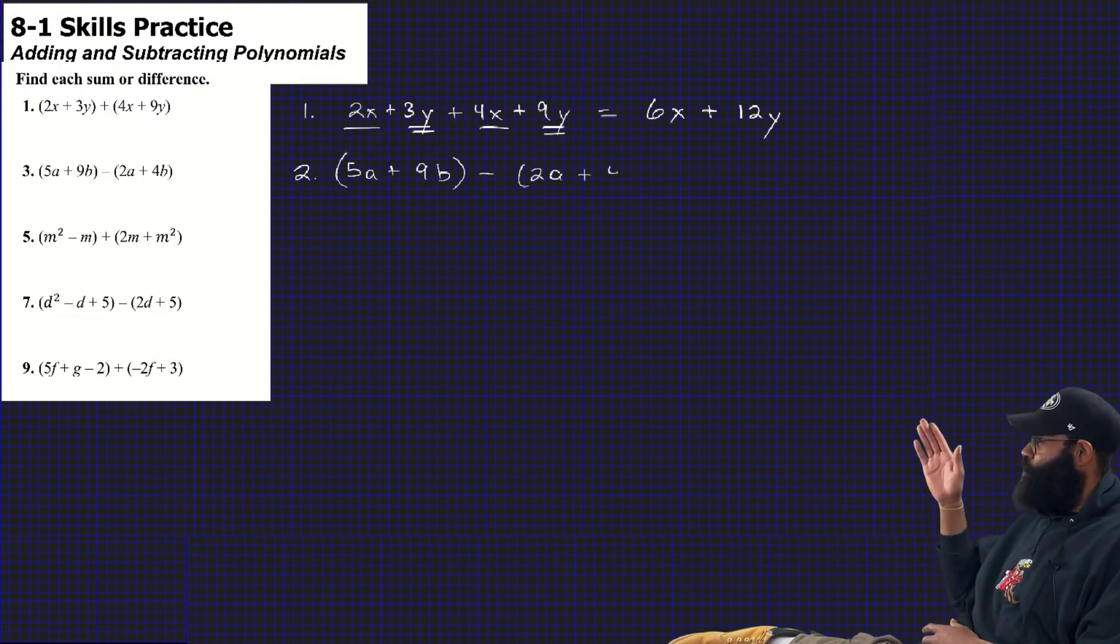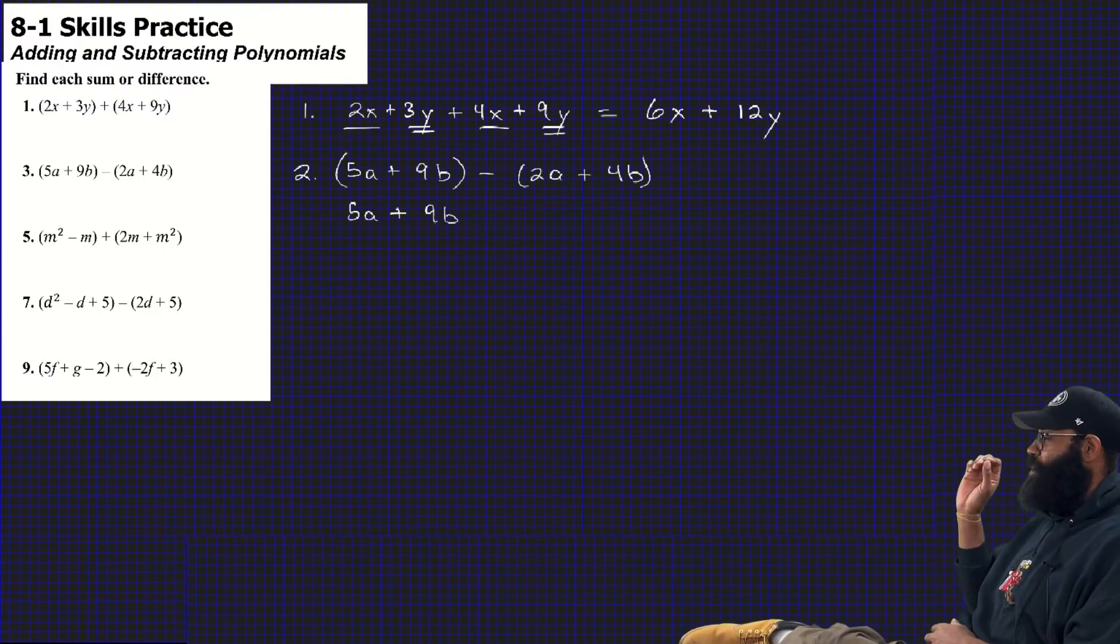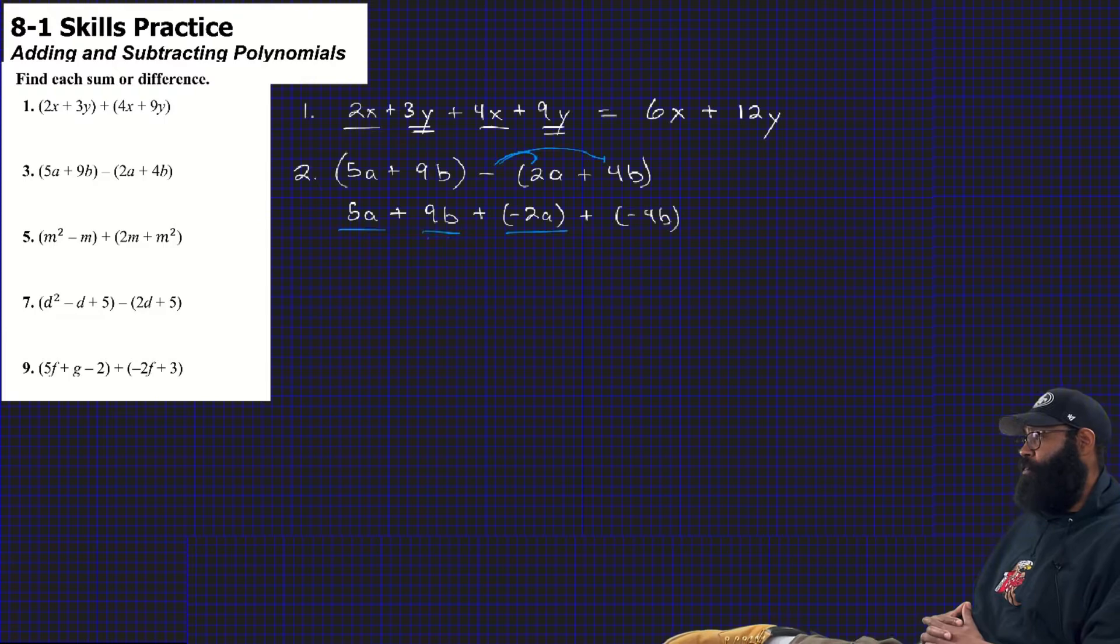We're going to be going that fast this whole time? Yeah, it's collecting like terms. Notice I have the parentheses for number 2, though. The parentheses are staying because I see the distributive property, the invisible one that will go after that minus. Distributing negative 2a plus negative 4b. Depending on how your teacher teaches this distributive property, I'm a big firm believer. I'm using the line method again. My 5a and my negative 2a is going to give me 3a.